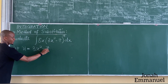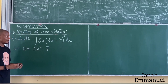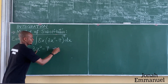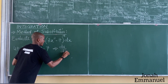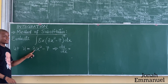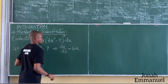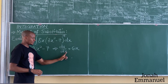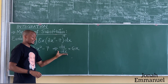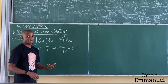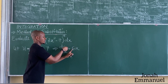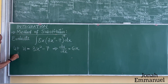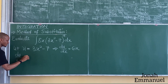I'll call this u, with u being equal to 3x squared minus 7. Next, I will differentiate. If I differentiate u with respect to x, I'm having du over dx equal to 6x — since 2 times 3 is 6, and differentiating the constant gives 0. Next, I'll move dx over here and du here to make dx the subject. I simply swap these two, so I'm having du all over 6x equals dx.